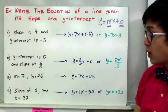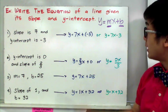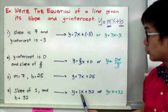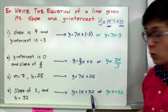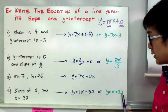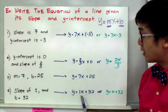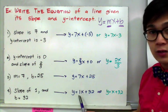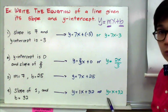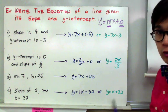For the last example, we have a slope of 1 and b equal to 32. Using the slope-intercept form, we have y equals 1x plus 32, or y equals x plus 32. Remember that we usually don't write the coefficient of 1, so we rewrite it as y equals x plus 32.